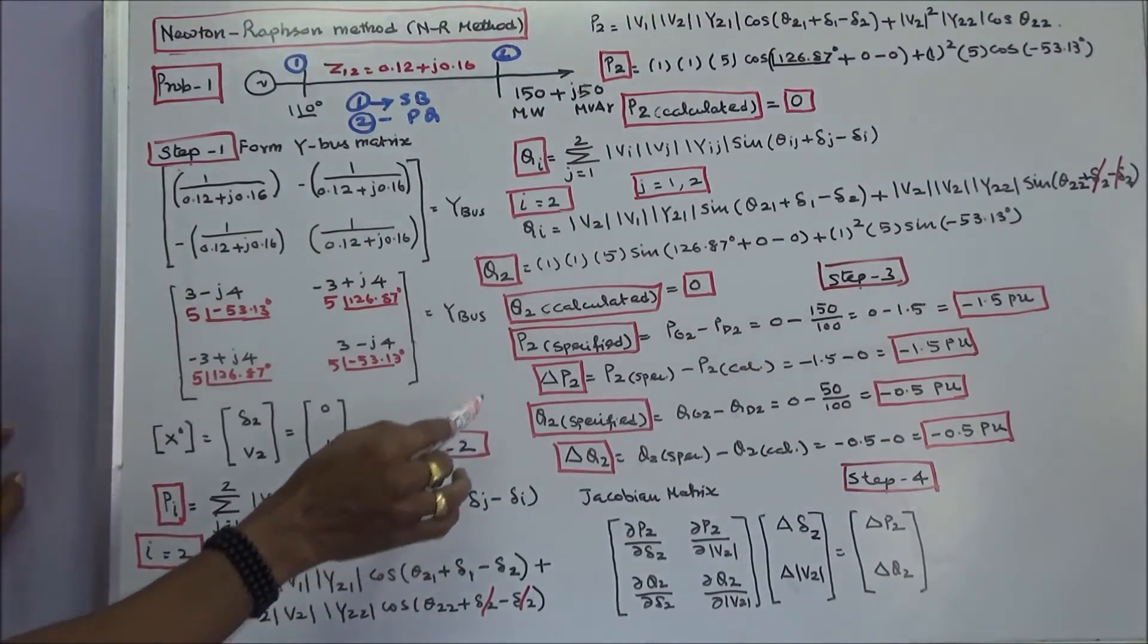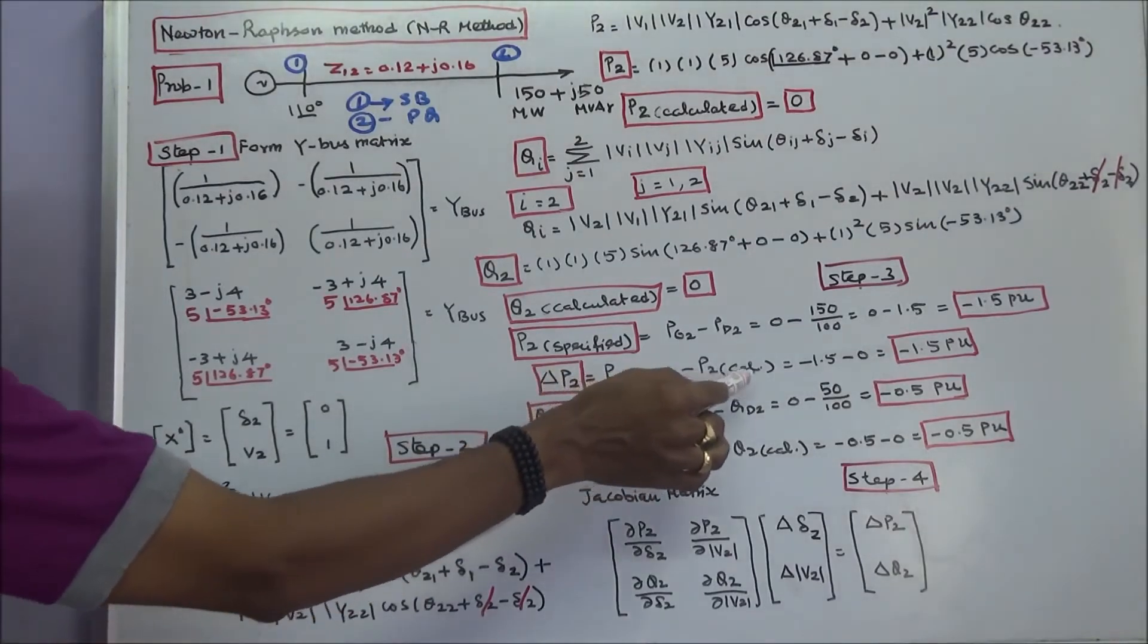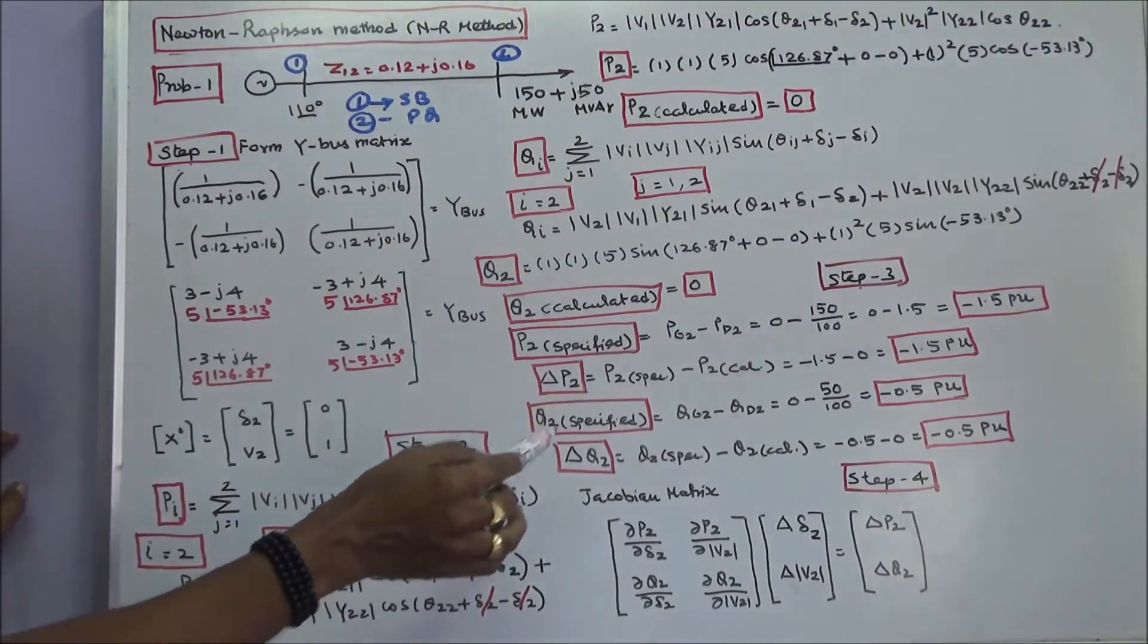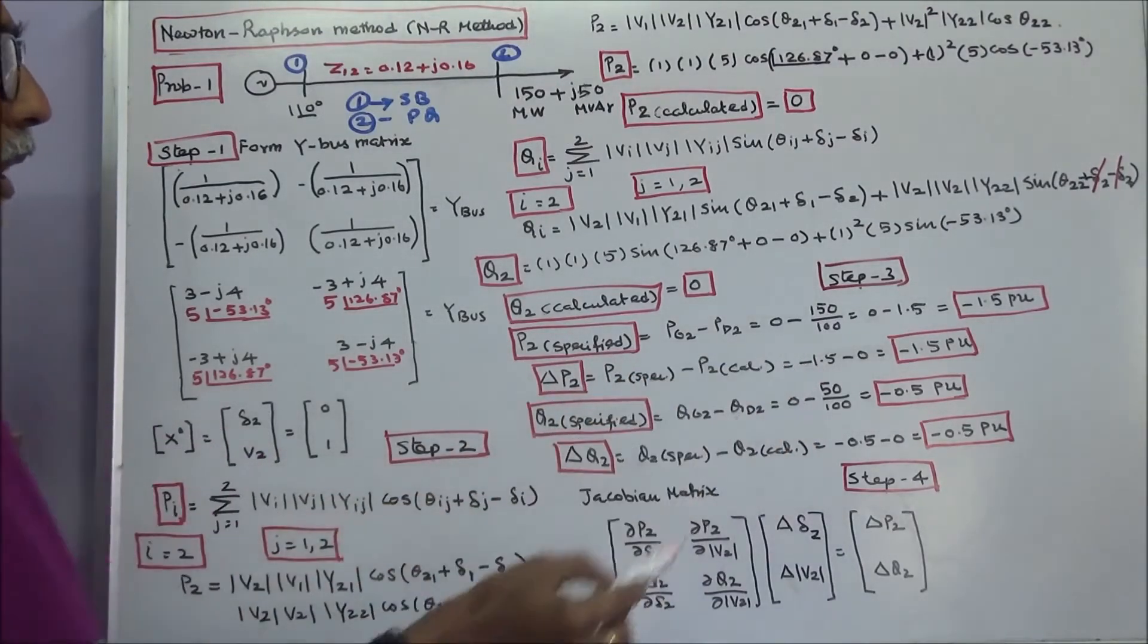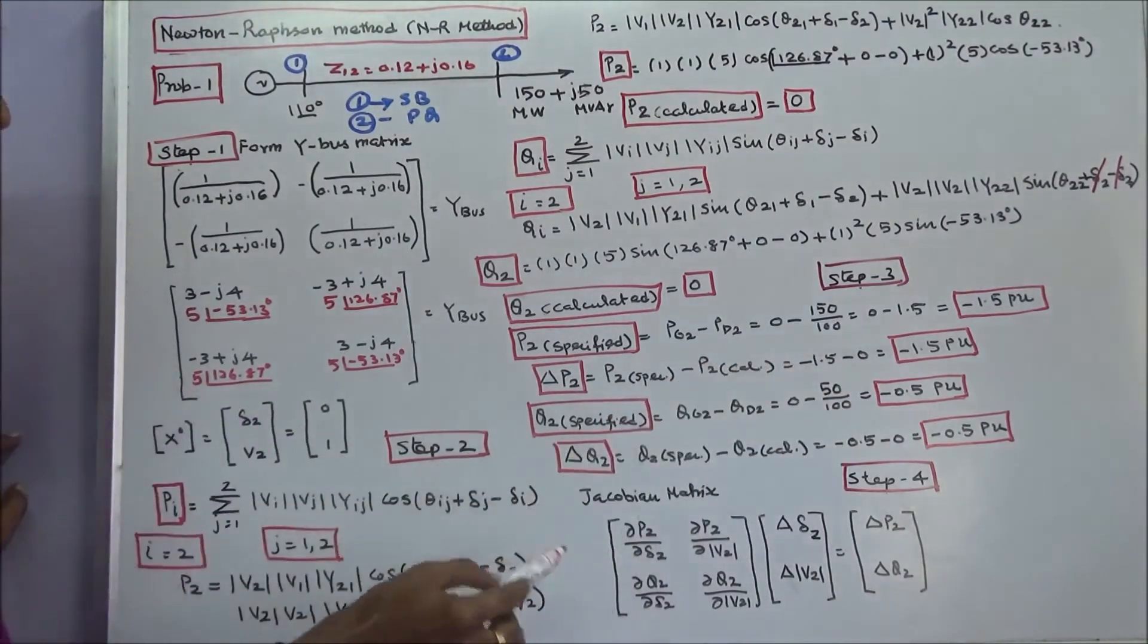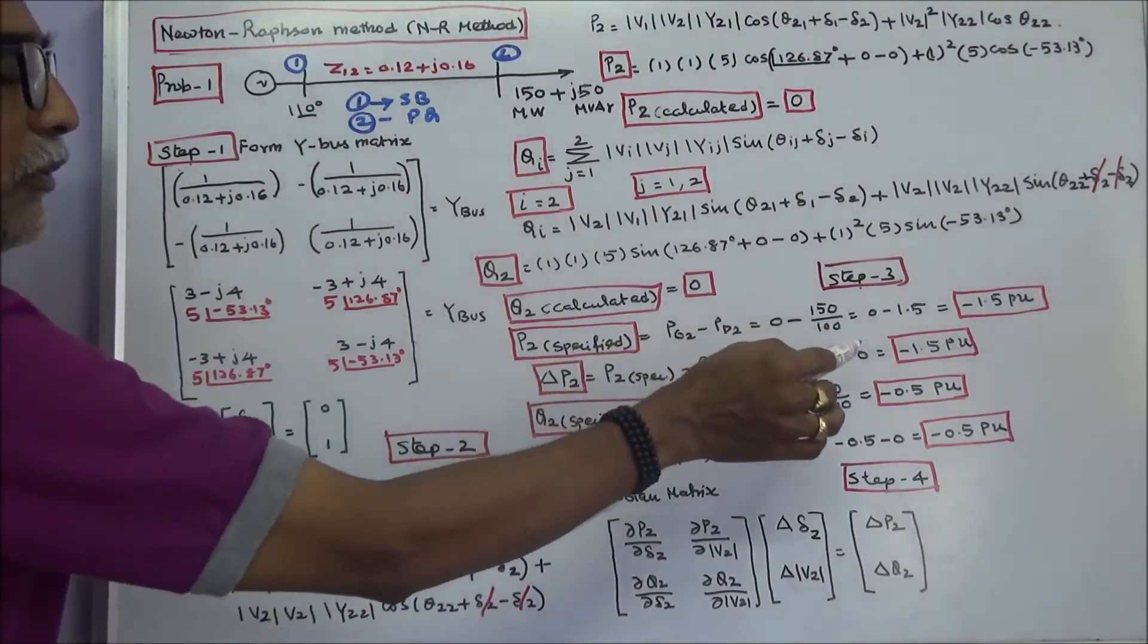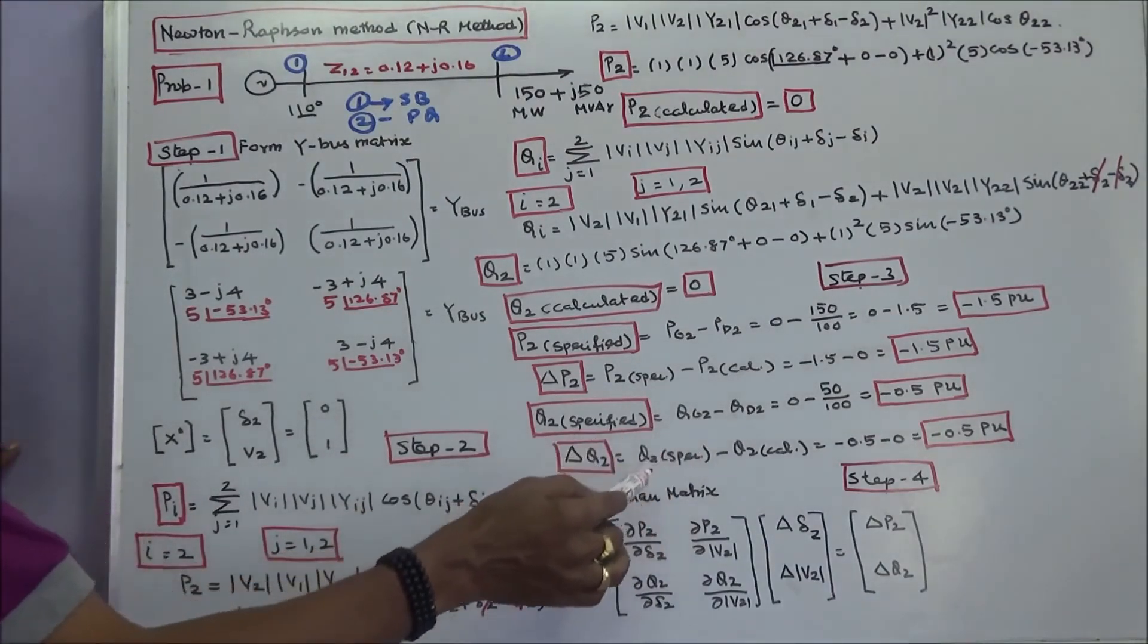I can calculate del P2, that is P2 specified minus P2 calculated. P2 specified is -1.5, P2 calculated is 0. Therefore, del P2 equals -1.5 per unit. Similarly, del Q2 equals Q2 specified minus Q2 calculated, which is -0.5 per unit.